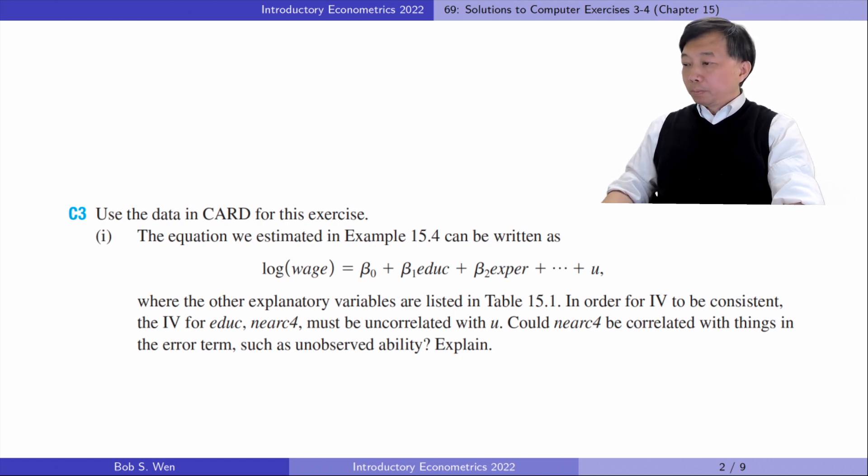The instrumental variable for education is whether growing up near a four-year college. The instrumental variable could be correlated with the unobserved factors in the error term. For example, parents who care about their children's growing up environment and education tend to live near colleges. Such family backgrounds will affect the kids' future earnings.